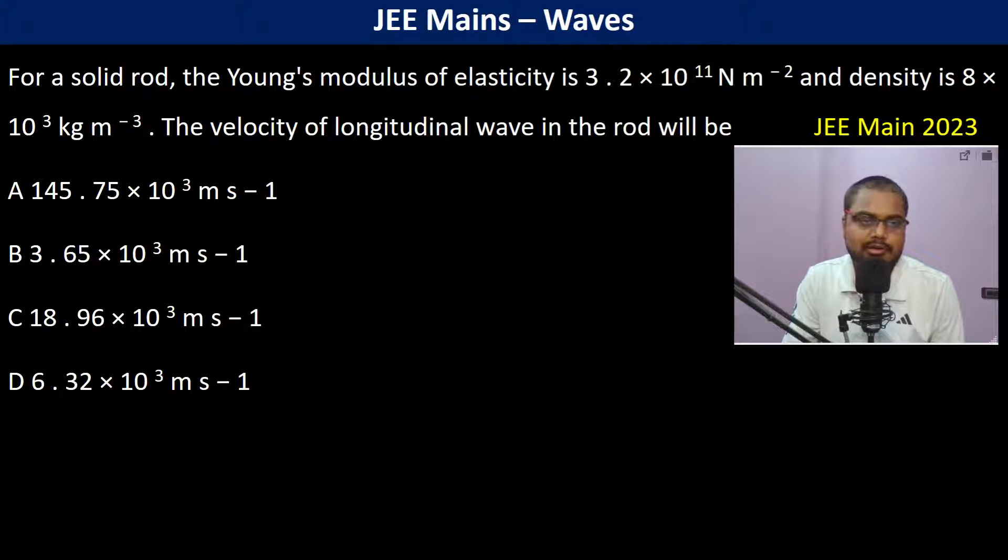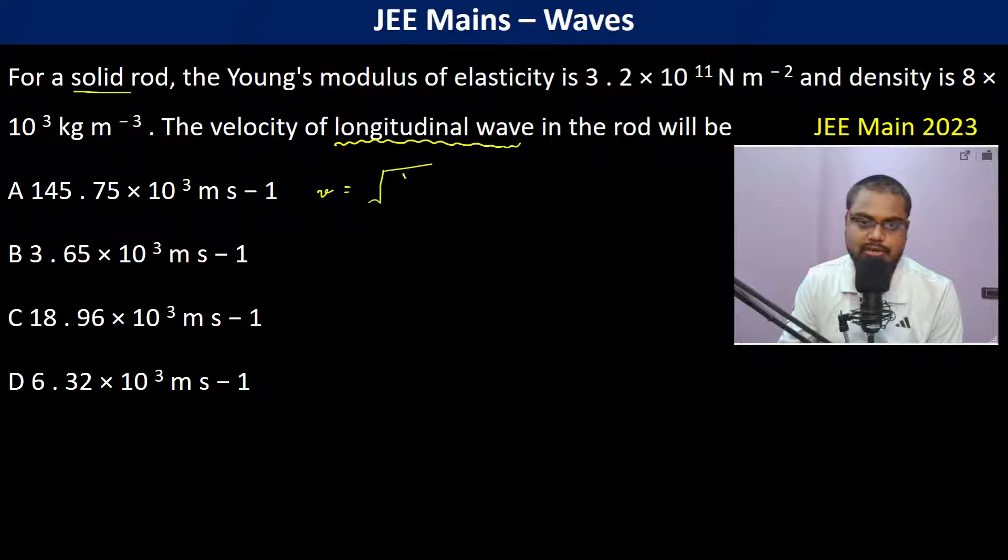For a solid rod, the Young's modulus of elasticity is this, density is this, the velocity of the longitudinal wave. So now here we are talking about the velocity of the longitudinal wave in the rod. So this becomes the root over Y divided by rho.